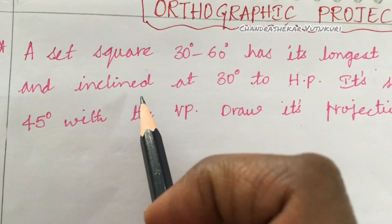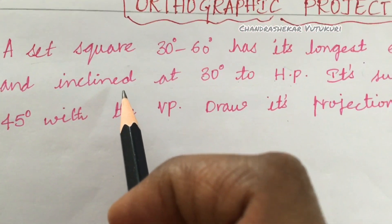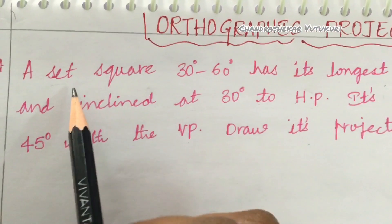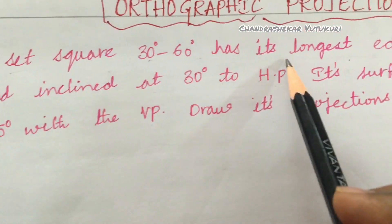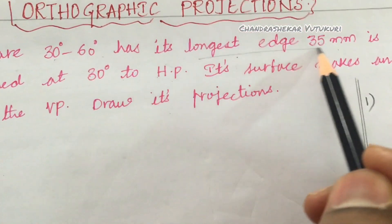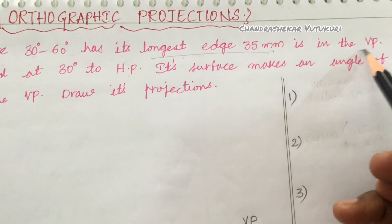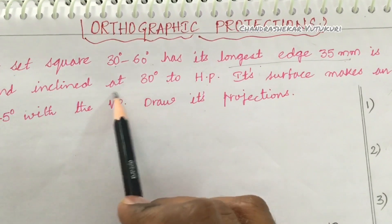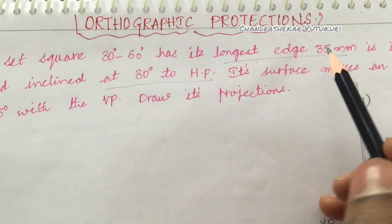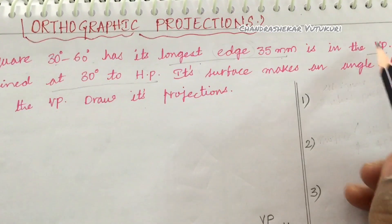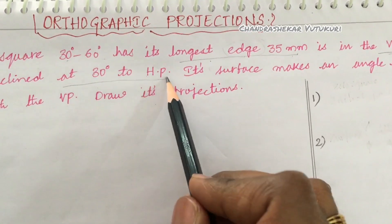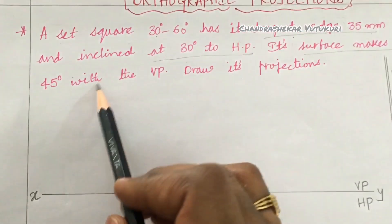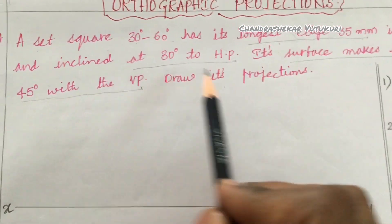Welcome back to my channel. In this video I am going to cover one problem related to the orthographic projection of planes. A set square 30-60 degree has its longest edge of 35 millimeters in the vertical plane and inclined at 30 degrees to HP. Its surface makes an angle of 45 degrees with the VP. Draw its projection.